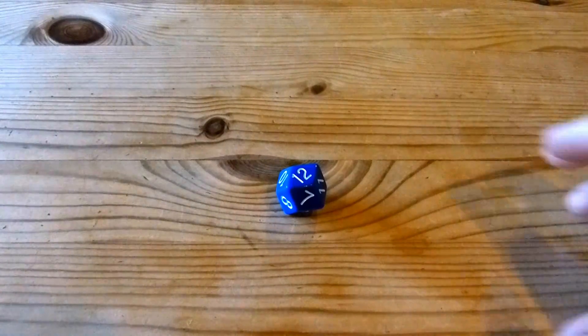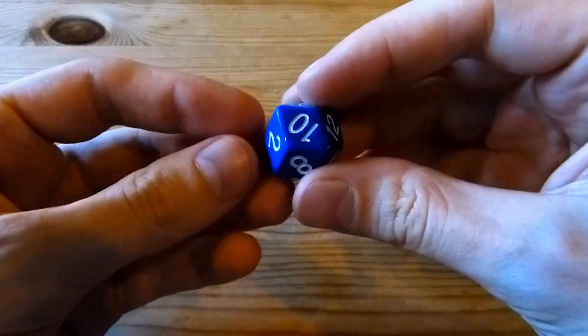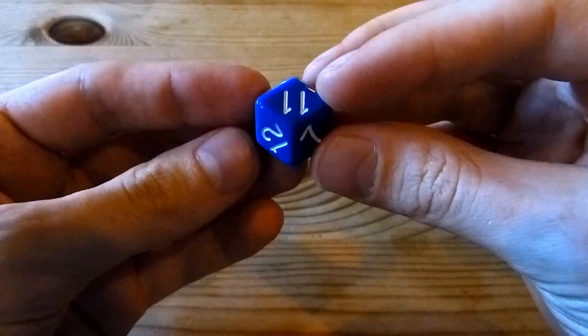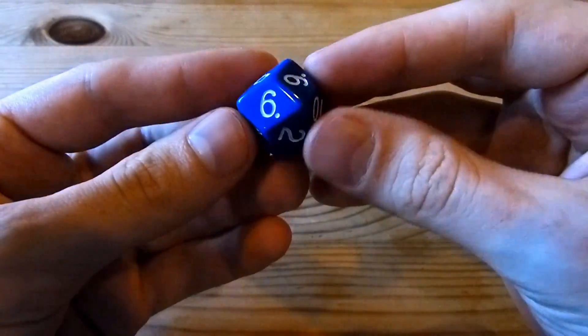Hi, my name is Henry Segermann. This is the D12 rhombic dodecahedron by the Dice Lab. The Dice Lab is myself and Robert Fathauer.